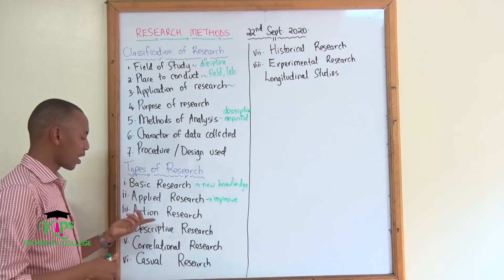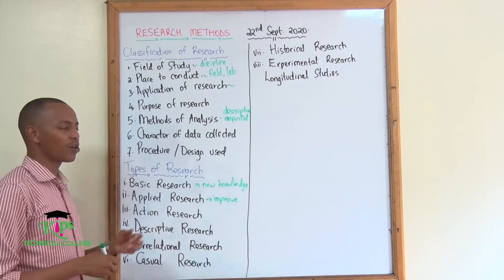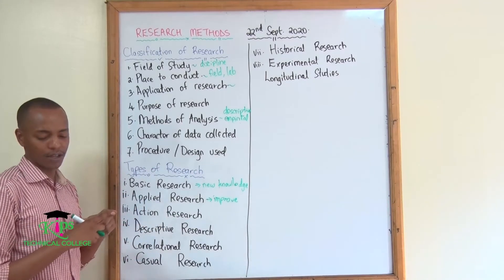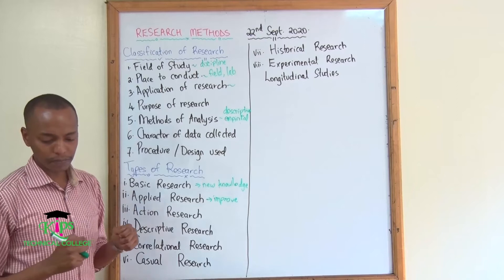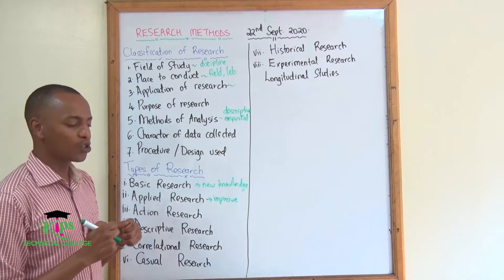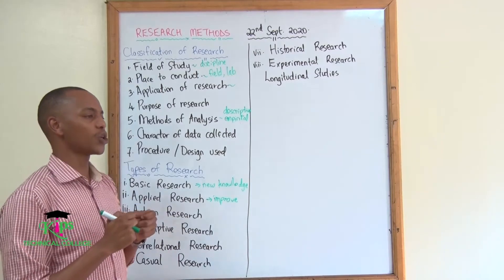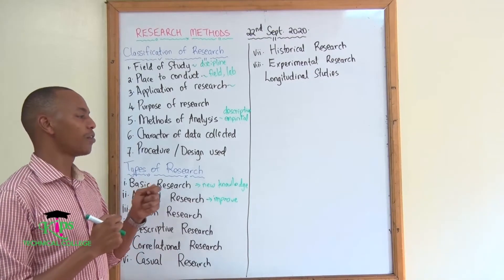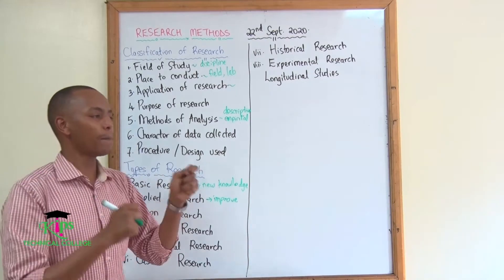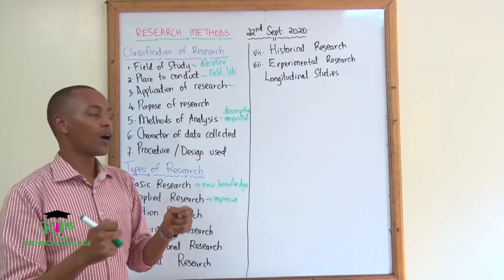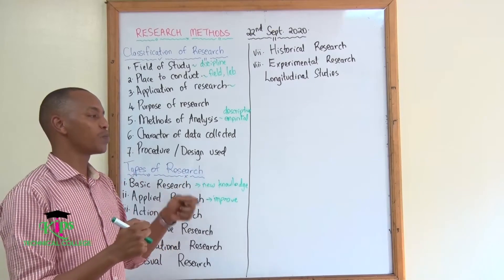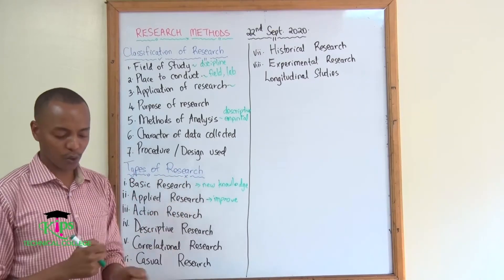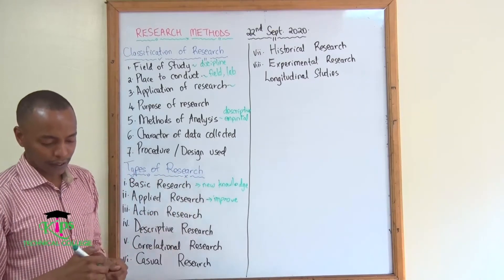Then you can look at action research. This is usually a small-scale kind of research that is usually situational, where you want to know: if I do A, B, and C, would the outcomes be 1, 2, and 3, or X, Y, and Z?